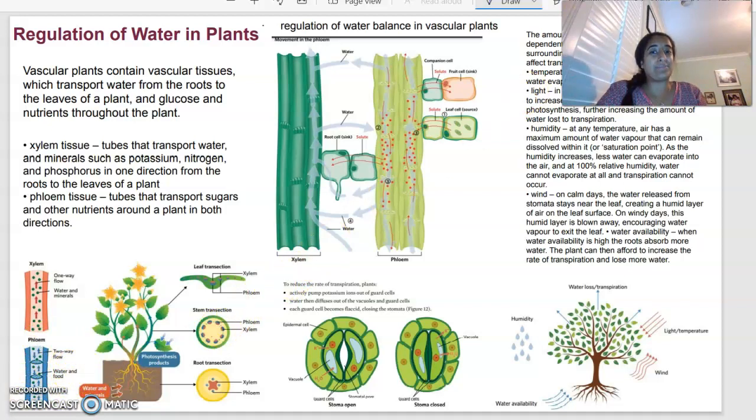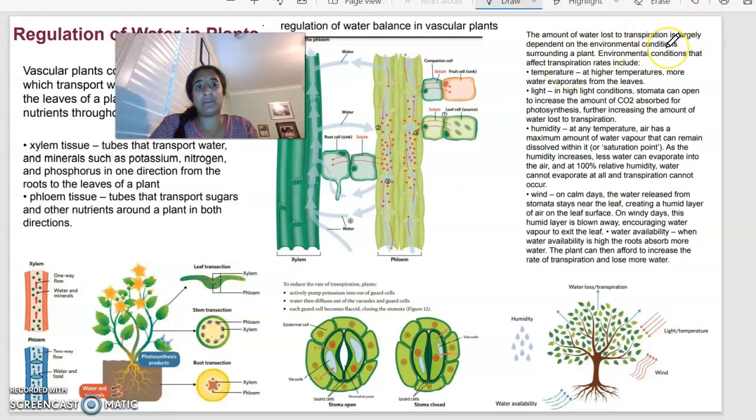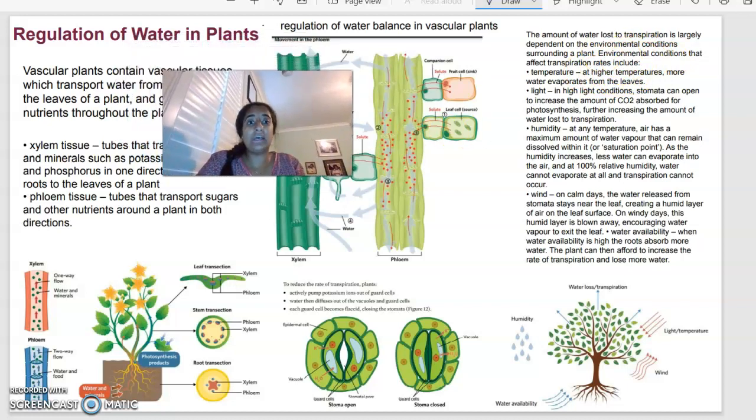In terms of transpiration, the amount of water lost due to transpiration is basically dependent on environmental conditions that surround the plant. So environmental conditions that might affect transpiration and water loss is temperature. So at higher temperatures, there's going to be more water that evaporates from the leaves. Light, in light conditions that are higher, the stomata can open to increase the amount of carbon dioxide that's going to be absorbed for photosynthesis, and that would increase the amount of water that's going to be lost.